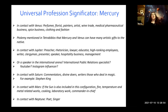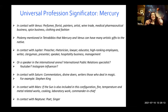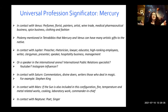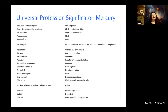In contact with Saturn: commentators, divine doers, writers, those who deal in magic. I find this very interesting because with this combination, I think of Stephen King immediately — I think he deals with magic. We will have a look at his chart in a minute. In contact with Mars, if the sun is also included in this configuration: fire, temperature, and metal-related works, cooking, laboratory work, commander in chief. In contact with Neptune: a poet, a singer, or a writer. Some Mercury professions include astronomers, doctors, editors, coaches, historians, journalists, locksmiths, narrators, notaries, mentors, post office officers, speakers, weather forecasters, travel agents, teachers, and textile workers.